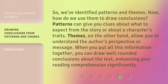So, we've identified patterns and themes. Now, how do we use them to draw conclusions? Patterns can give you clues about what to expect from the story or about a character's traits. Themes, on the other hand, allow you to understand the author's perspective or message. When you put all this information together, you can draw well-rounded conclusions about the text, enhancing your reading comprehension significantly.